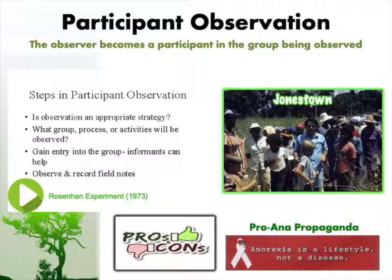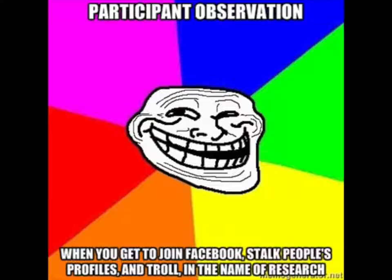The next data collection method is participant observation — when the observer becomes a participant in the group being observed. There are two types: overt participant observation, where everyone knows you are a researcher there to observe, and covert participant observation, where you go into the group undercover and they have no idea you are a researcher.